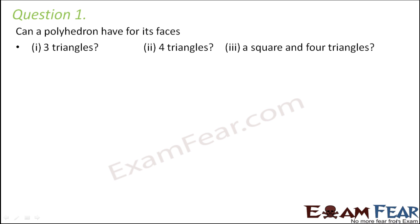Let us analyze each option one by one. A polyhedron with three triangles — no matter whatever way you try to arrange those three triangles, you would see that they will never meet at a point to form a closed solid structure to make a polyhedron. So it is definitely not possible that a polyhedron with three triangles can be formed.